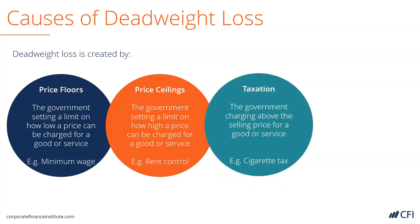The third cause is taxation. This is when the government adds taxes to a good or service that brings its selling price above the equilibrium level. For example, taxes on specific goods like cigarettes or alcohol cause deadweight loss.